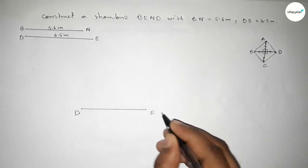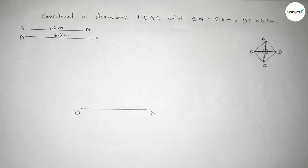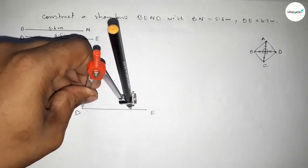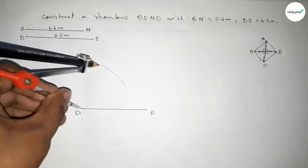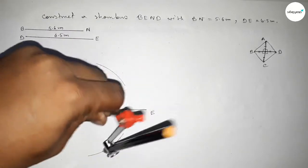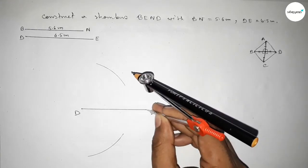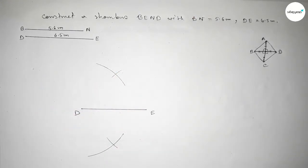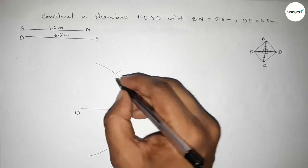Now we have to bisect this diagonal. Drawing an arc this way, taking greater than half of this and drawing arc this way, putting the compass here and cut here and cut here. Both curves intersect at two points.